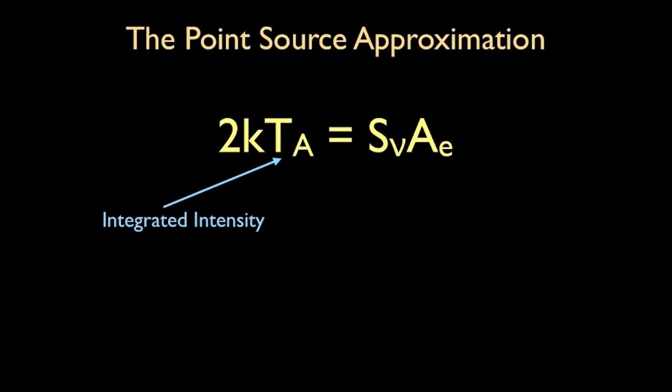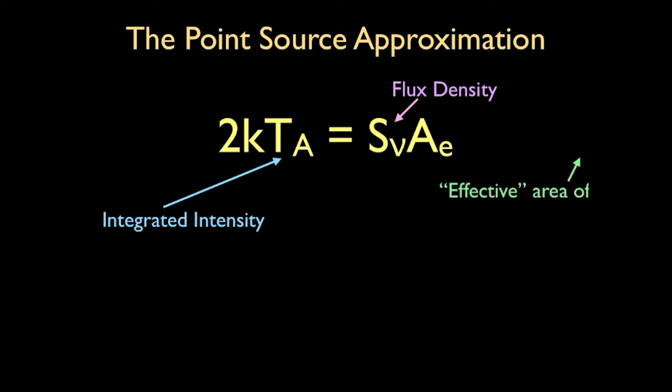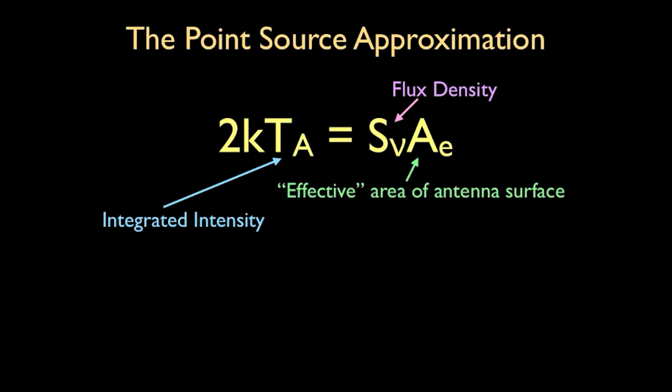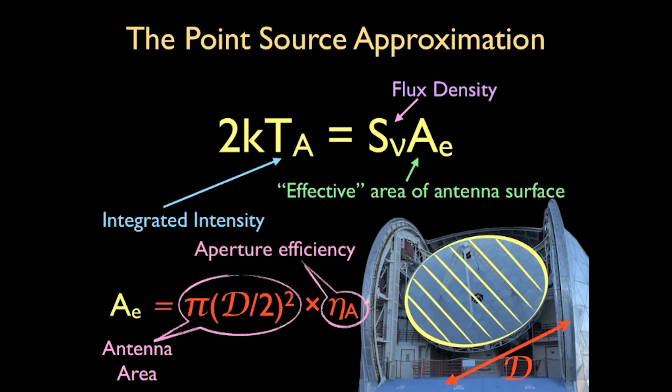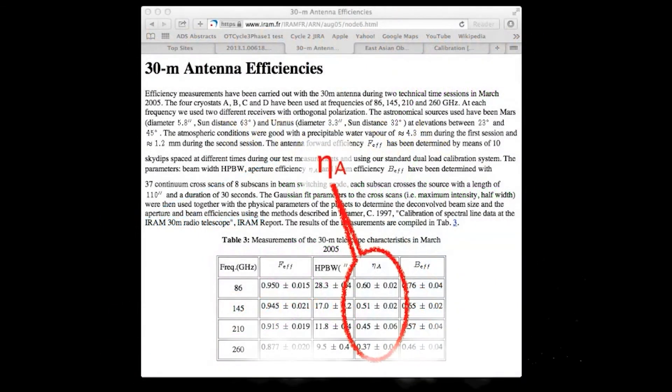Where this is the integrated intensity in kelvins kilometer per second, this is the flux density, and this is the effective area of the antenna surface of the single-dish telescope, equal to the area of the antenna, pi r squared, times the overall aperture efficiency.